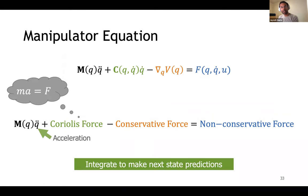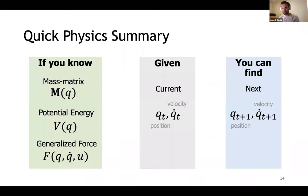Note the similarities to Newton's F equals MA formulation. Since this equation is an ordinary differential equation, we can integrate it to make next state predictions. To quickly summarize the physics that we'll need: if we were to know the mass matrix M(q), potential energy V_D(q), and the force F_D(q, q̇, u) acting on the system, and we're given the current state of the system in terms of its position and velocity, we can find the next state using the manipulator equation.